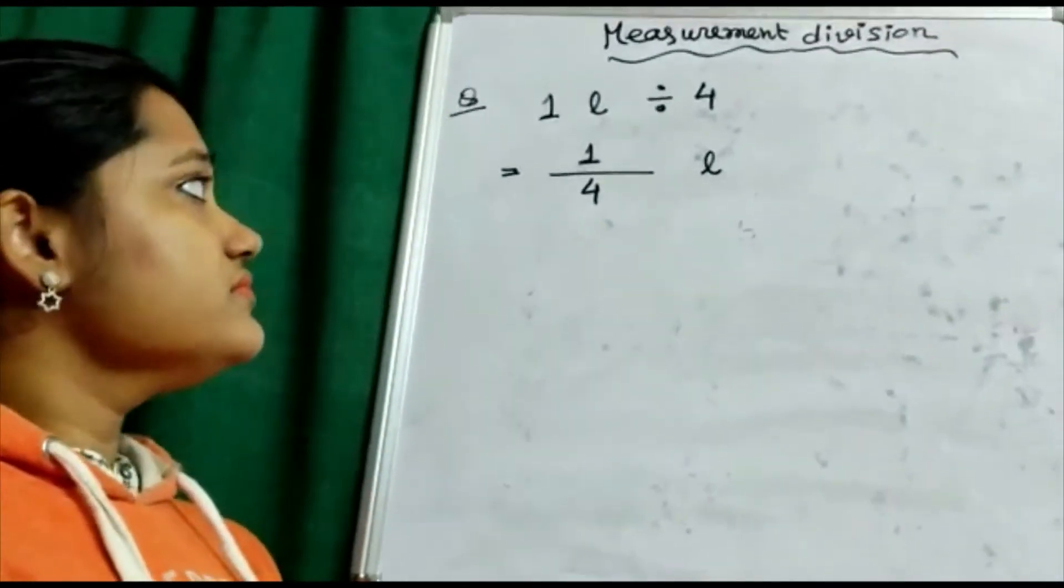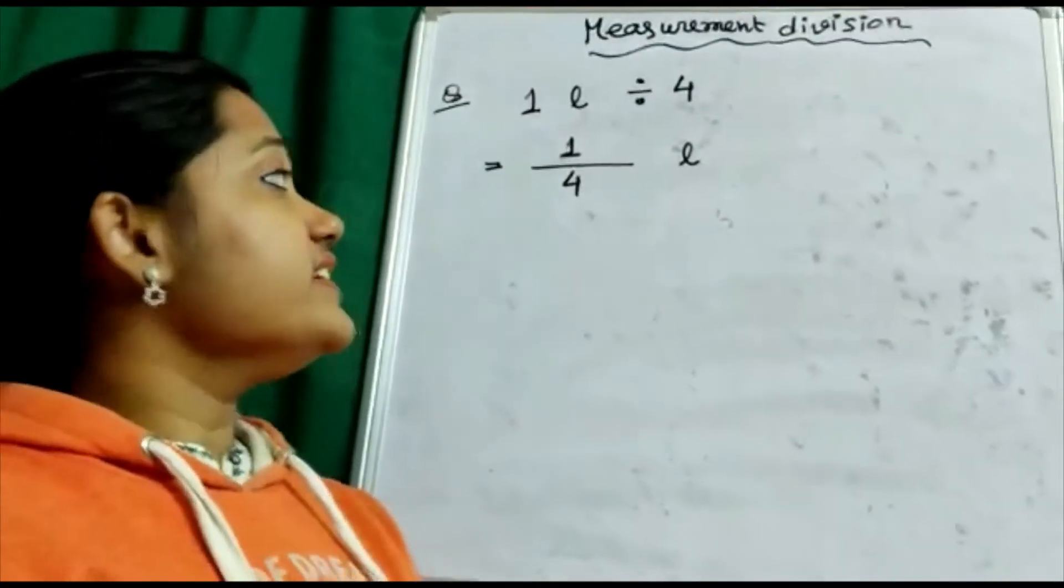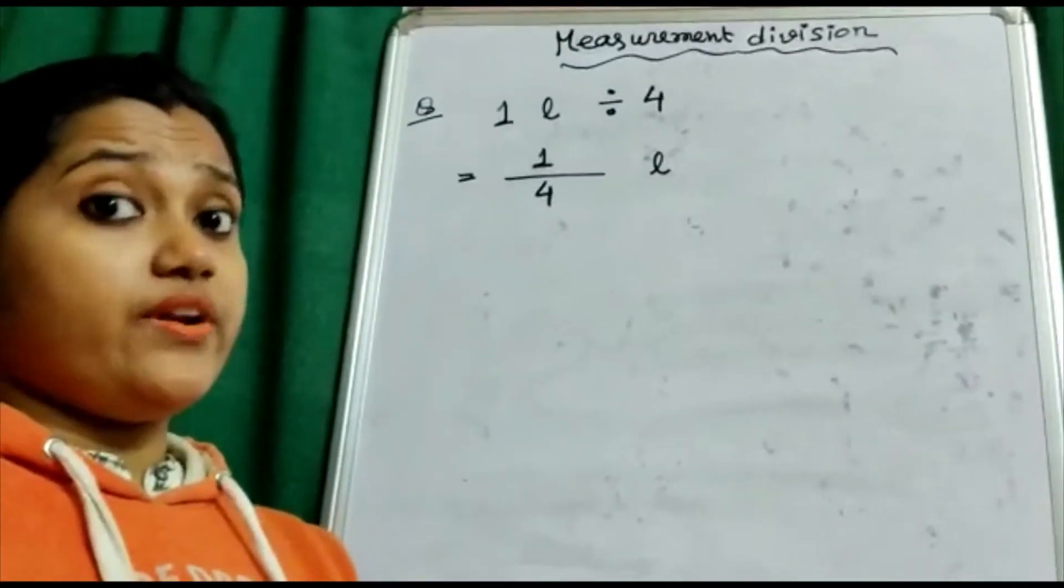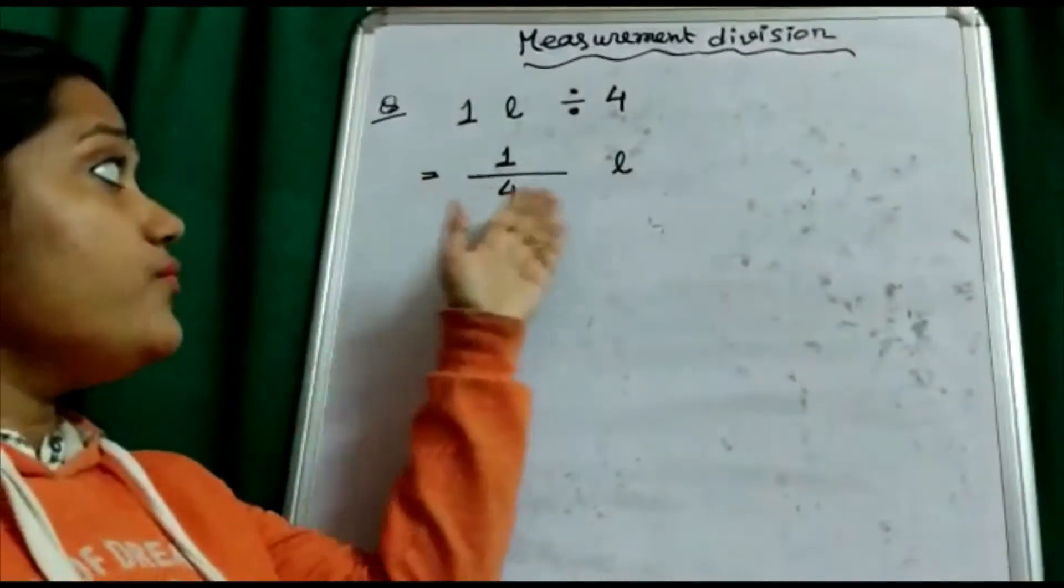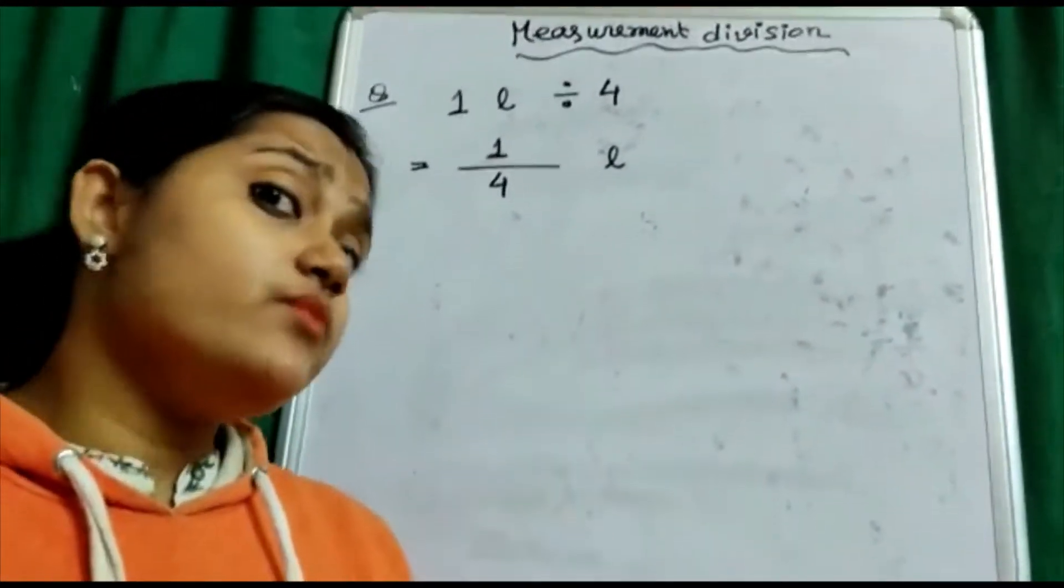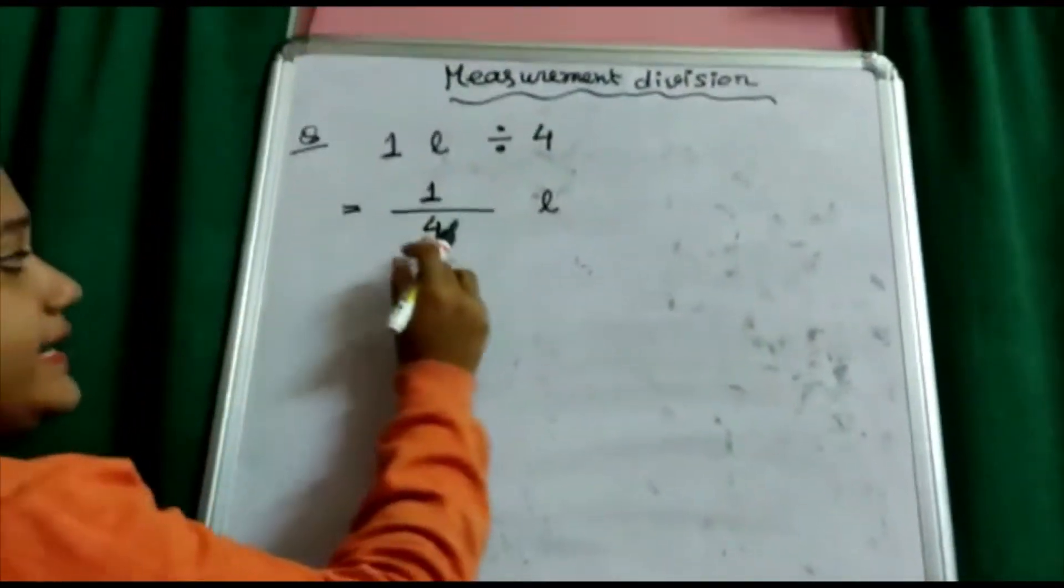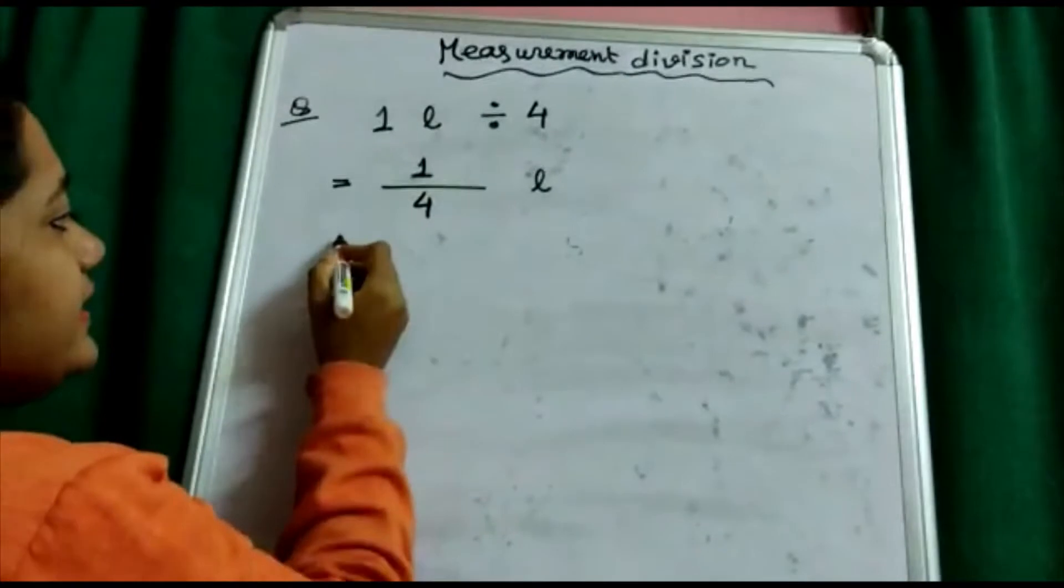One liter divided by four. I haven't got the solution yet. That is, each one of your friend will get one-fourth liter. But how much is that one-fourth liter?